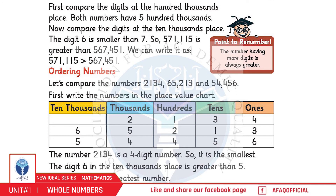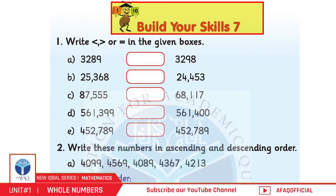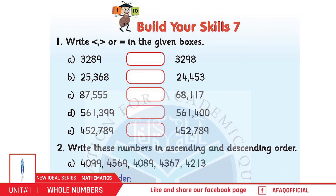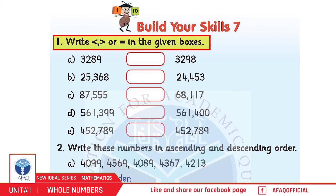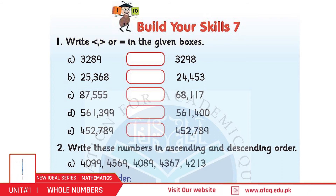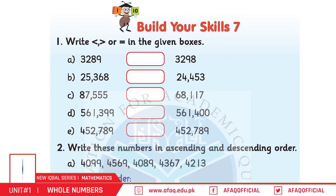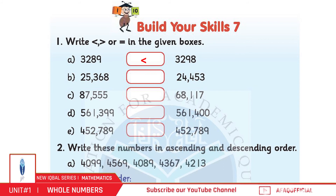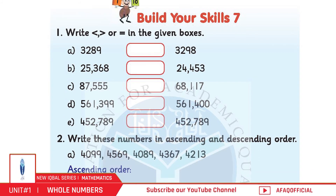Ordering Numbers: हम Place Value Chart का इस्तिमाल करके numbers को order भी कर सकते हैं। Build Your Skills 7, Page 16. Question 1: Write Less Than, Greater Than, or Equal in the given boxes. A: 3,289 vs 3,298 — 3,289 is less than 3,298. इसी तरह से अगले parts आप खुद करें।